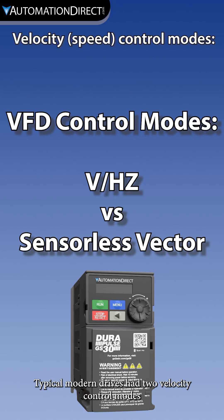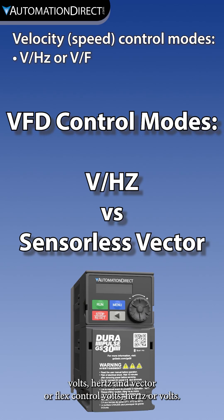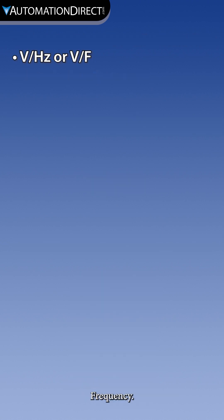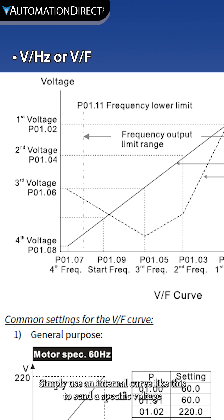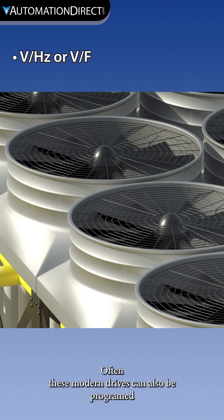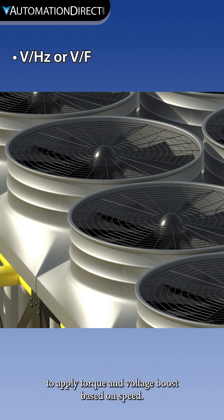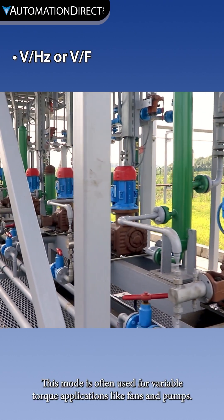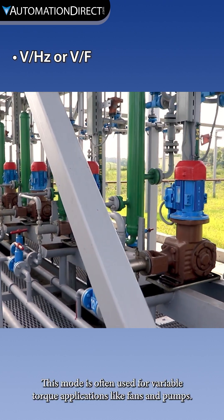Typical modern drives have two velocity control modes: volts-hertz and vector or flux control. Volts-hertz, or volts-frequency, simply uses an internal curve like this to send a specific voltage and frequency to the drive based on the speed command. Often, these modern drives can also be programmed to apply torque and voltage boost based on speed. This mode is often used for variable torque applications like fans and pumps.